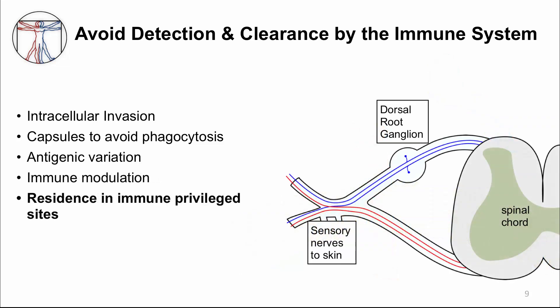Another way of avoiding detection and clearance by the immune system is to persist in a location that has low surveillance by immune cells. For example, varicella zoster virus persists in the neuronal cells of the dorsal root ganglion, which is part of the spinal cord. Varicella zoster virus can avoid being detected by immune cells in this location, and this type of persistence is termed latency — a phase where the virus is dormant and no viral replication is occurring.